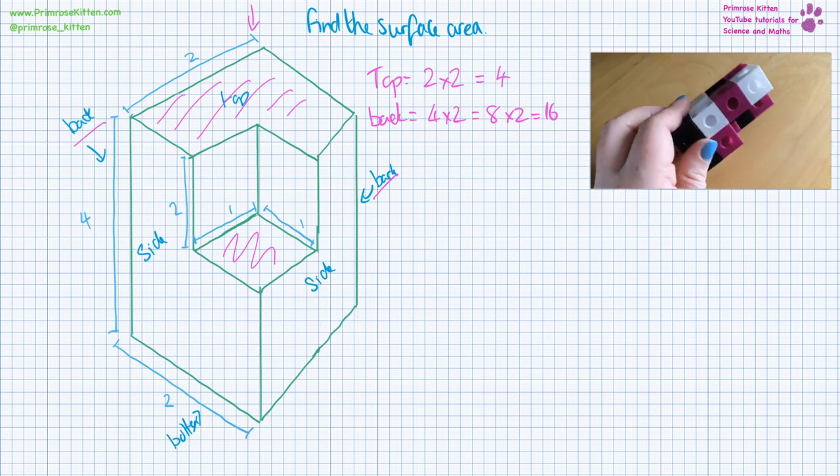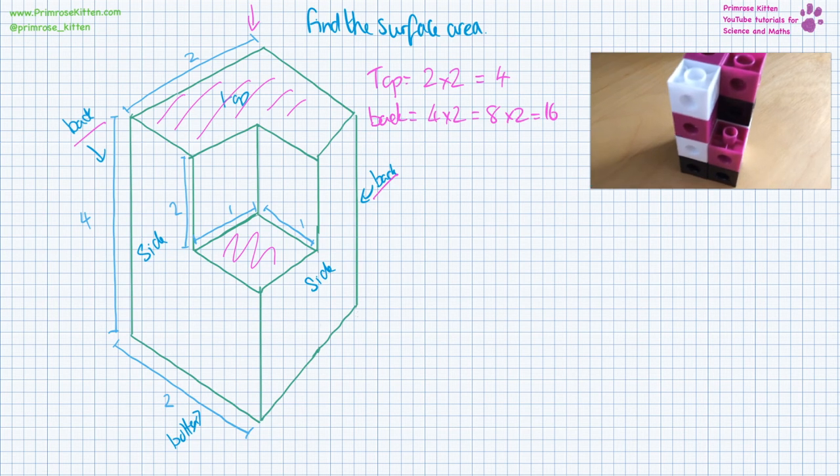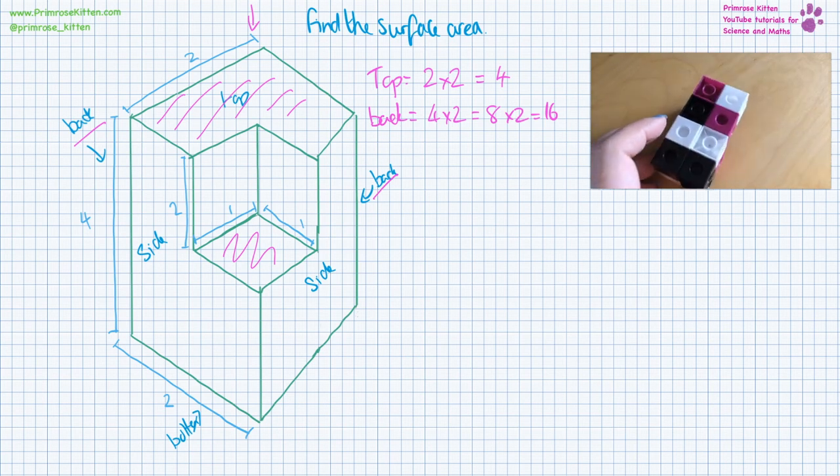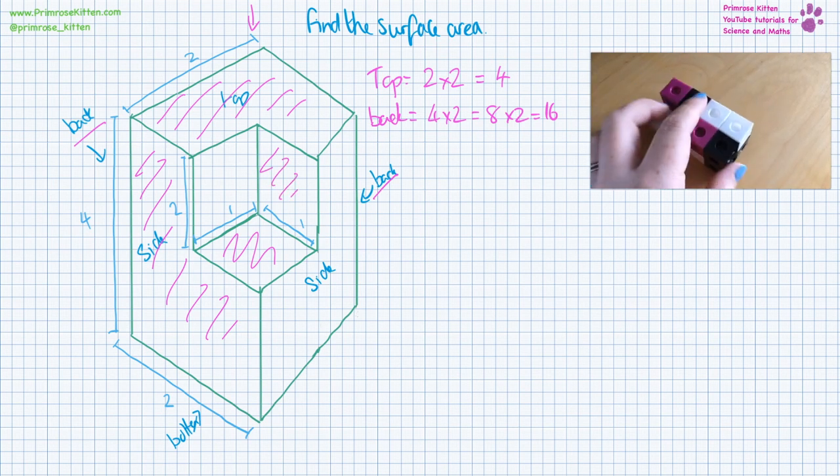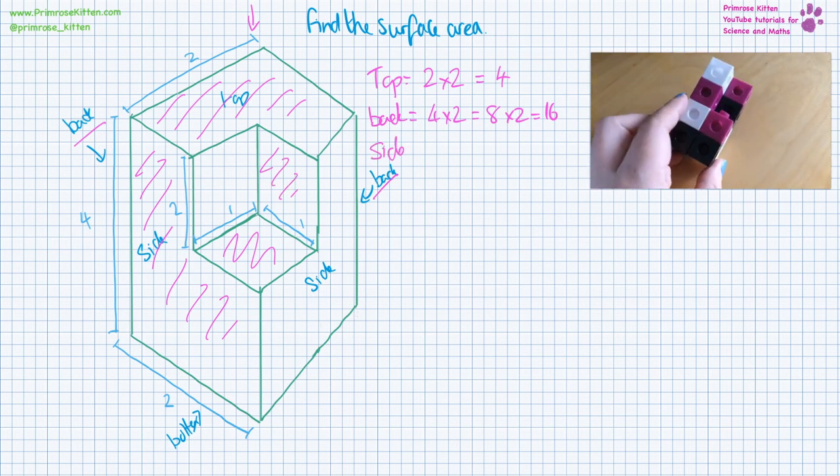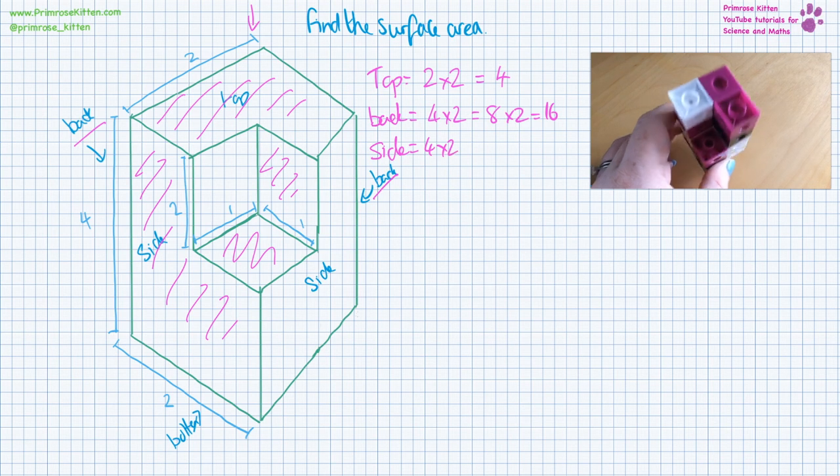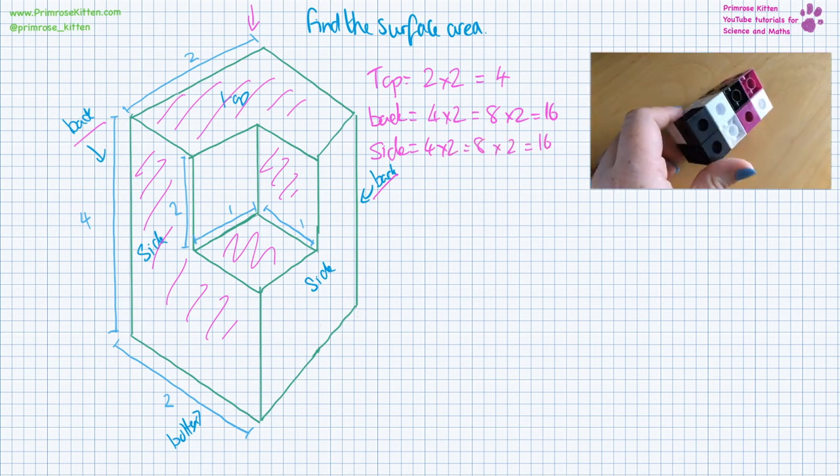Now the side is this bit and this bit. This is exactly the same as the back was. Because even though there is this bit here, when we are actually looking at it from the side we see this bit here as well. So the side is just 4 times 2 which equals 8 and we have 2 of those giving us 16.